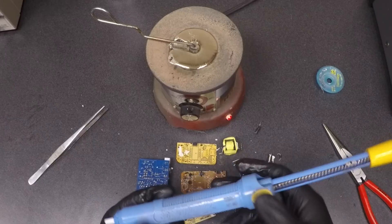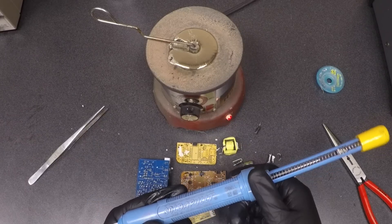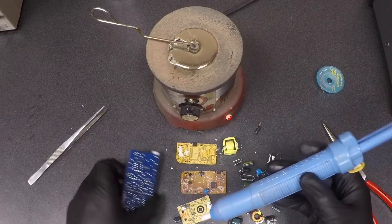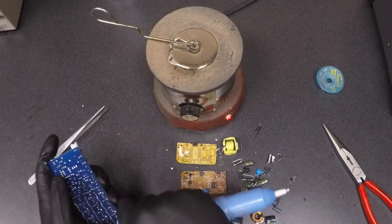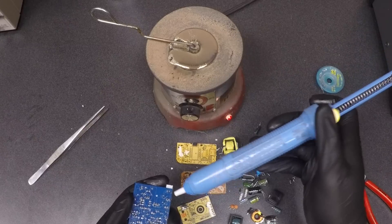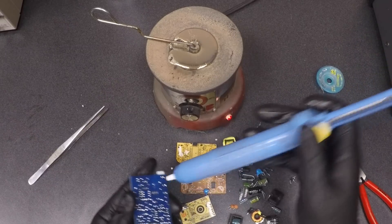You could use a manual solder sucker like this one. This specific model is pretty good, and cheaper units don't usually work as well. It's pretty easy to use—all you need to do is hold a soldering iron up to the joint until the solder melts, and then immediately hold the pump up to the solder and press the button.